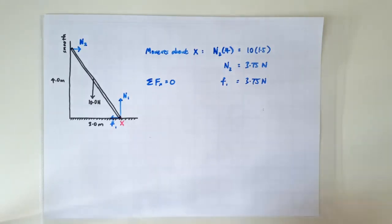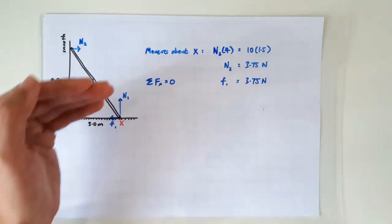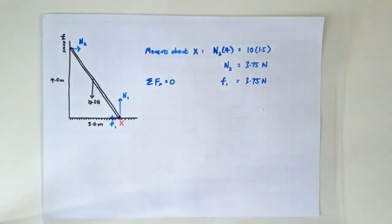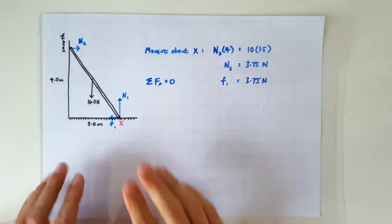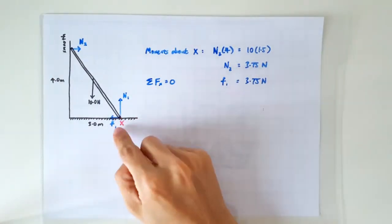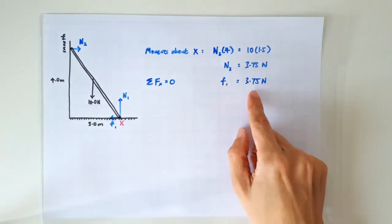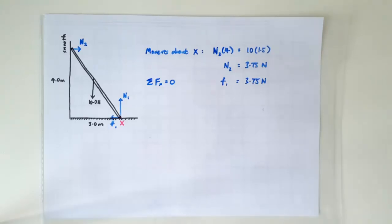Next, we know that horizontally, all the leftward forces must be balanced by all the rightward forces. So in this problem, horizontally we have only F1 and N2. So the leftward F1 must be balanced by the rightward N2. So F1 turns out to be 3.75 newtons as well.